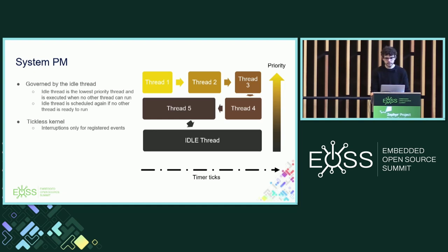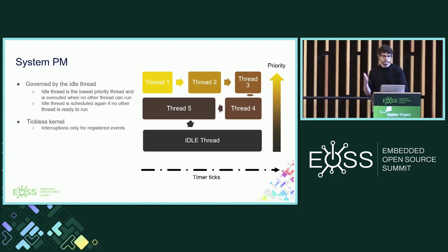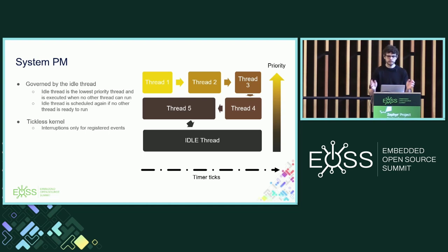As you can see in this diagram, the scheduler will execute thread one, then when thread one meets a reschedule point — caused by waiting on a semaphore, yielding, or sleeping — the thread is marked as suspended or waiting. Then it does the same for thread two, thread three, and so on. Finally, when all threads are suspended or waiting, the scheduler will schedule a special thread: the idle thread. There is one idle thread per CPU and it is created with the lowest priority, ensuring the idle thread is executed only when there is nothing else to do.